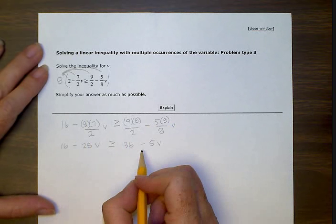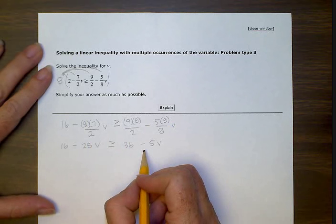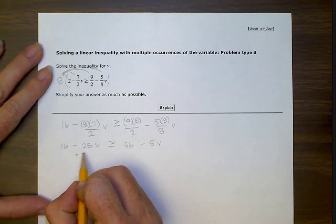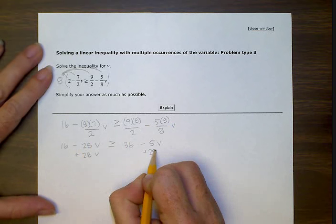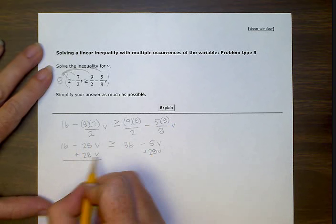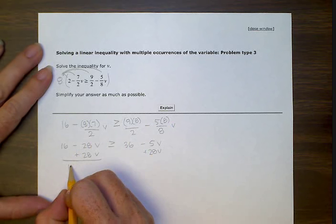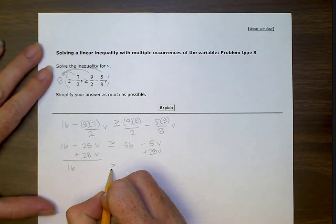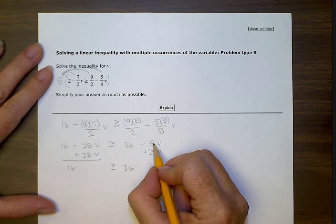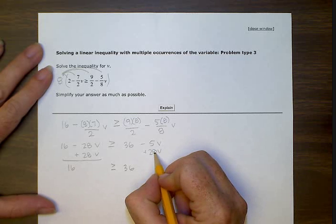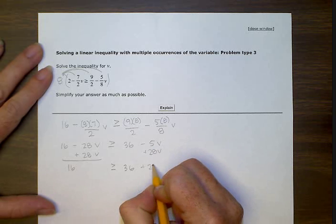Okay, so now we want to have our v's be together and our numbers be together. So let's add 28v to both sides. That will give us 16 over here, still greater than 36. Now a minus 5 plus 28 gives us 23v's.